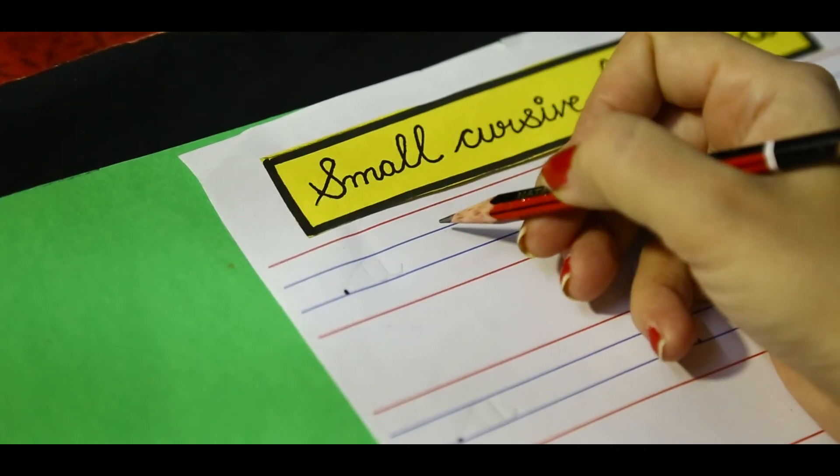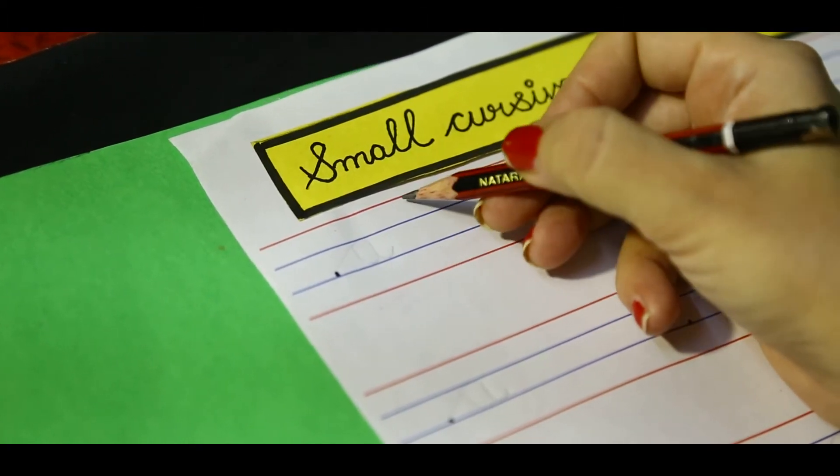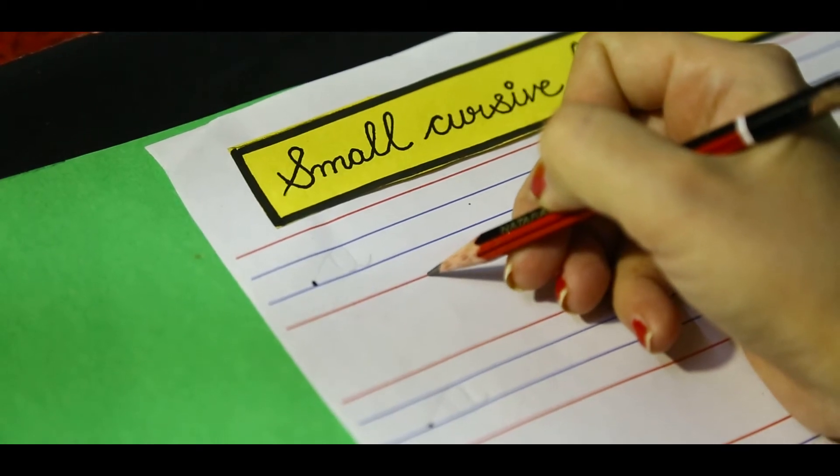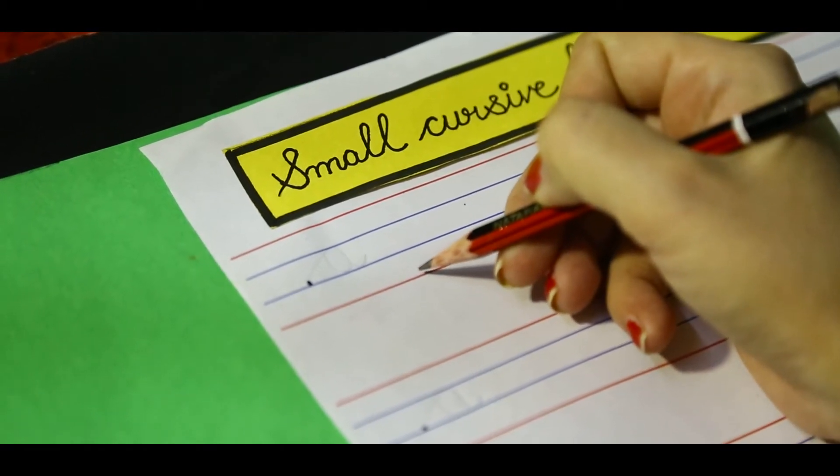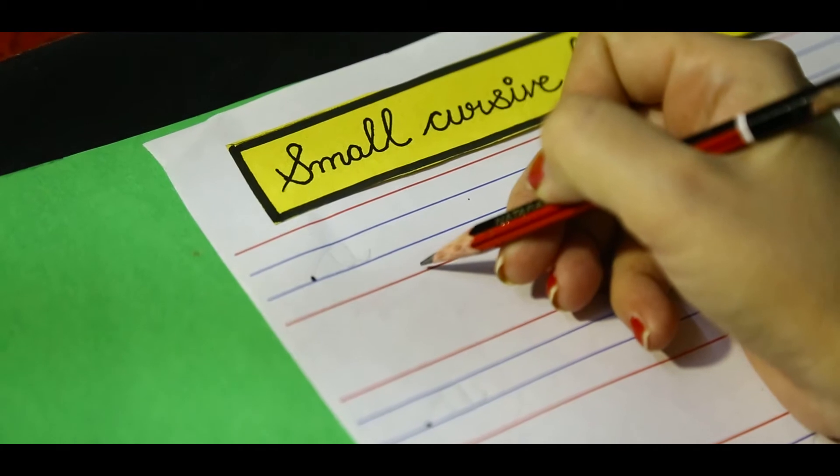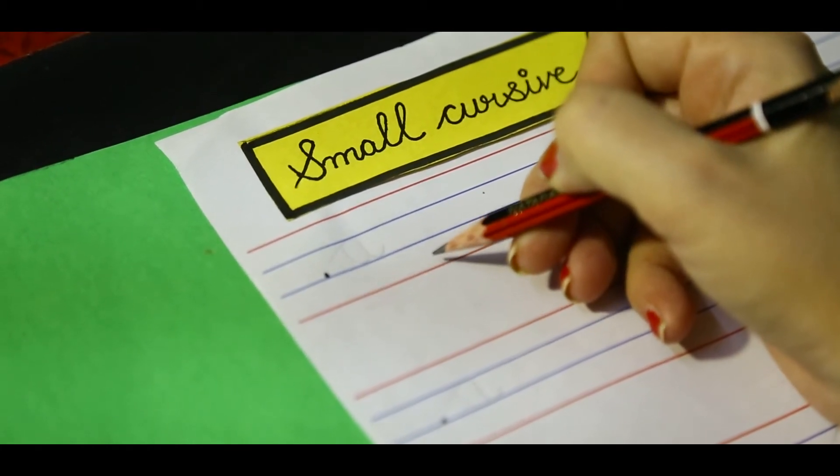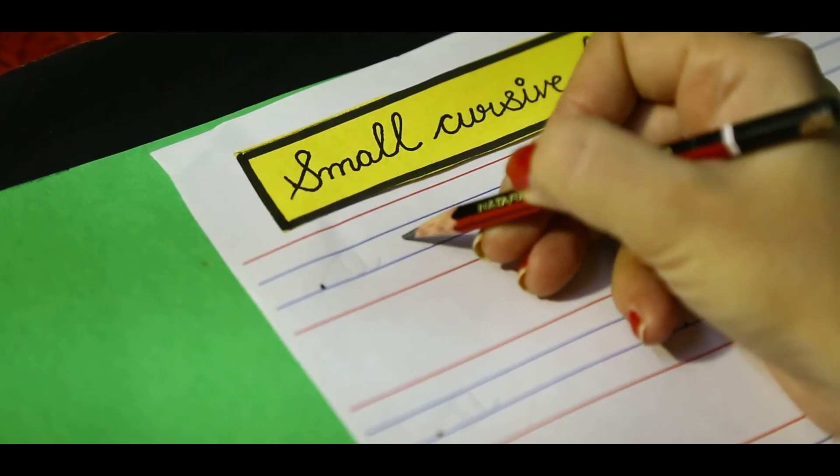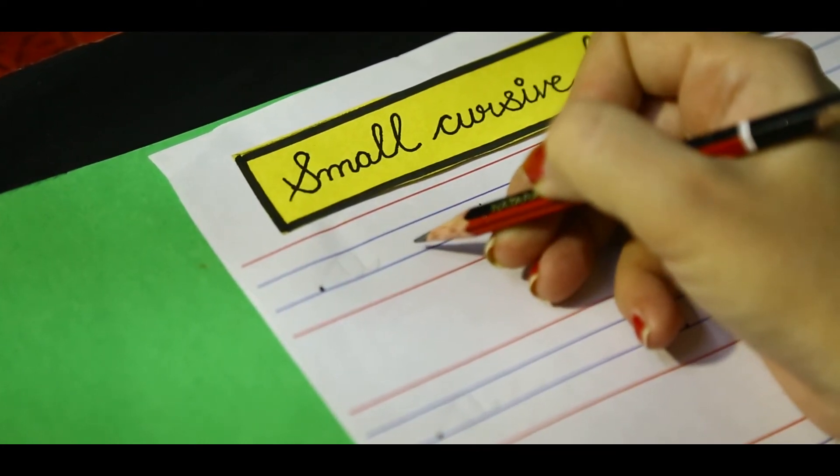In English notebook there are four lines: red line, blue line, blue line, red line. And this time we have to make small cursive letter D in these three lines. How? Let's see.